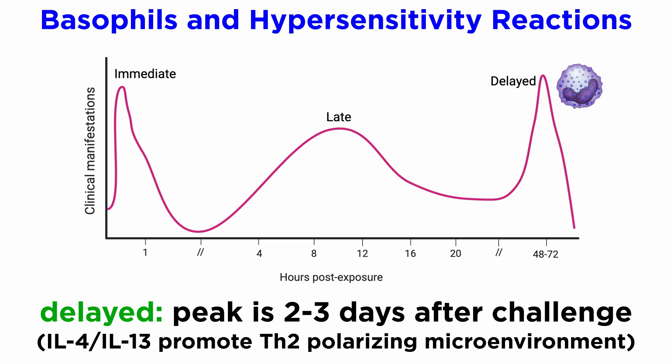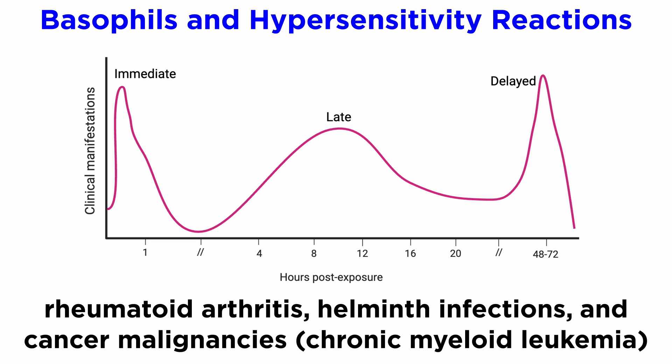Studies strongly indicate that production of IL-4 and IL-13 via basophils promotes a TH2-polarizing microenvironment. Additionally, basophils are implicated in the pathogenesis of rheumatoid arthritis, helminth infections, and in certain cancer malignancies such as chronic myeloid leukemia.